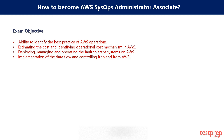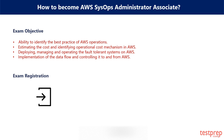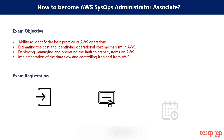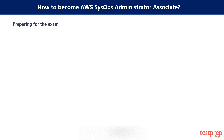Exam Registration. Follow the steps below for registration: first, register and sign into AWS Training; after that, click on Certification at the top; then click on AWS Certification Account; then Schedule New Exam; check for the exam you want to take and click the Schedule at Pearson VUE button or PSI.